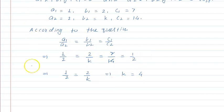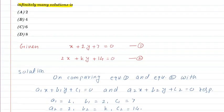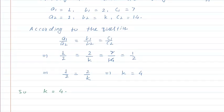So the value of k is equal to 4. Let's check which option is correct. Option B matches our answer, so option B is correct. I hope you understood the solution, thank you.